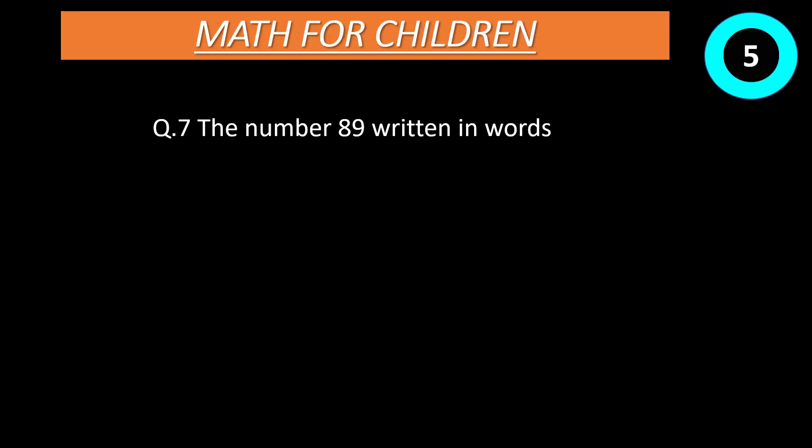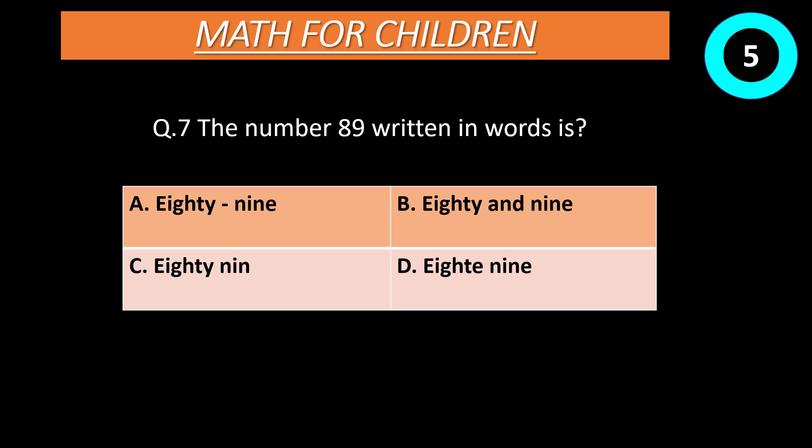Question number 7: The number 89 written in words is? A: eighty-nine. B: eighty and nine. C: eighty nin. D: eighte nine. Time start now. Correct answer is A, eighty-nine.